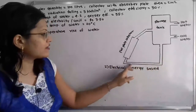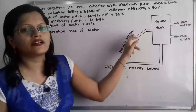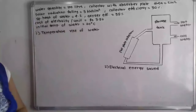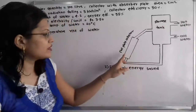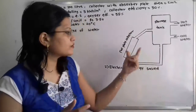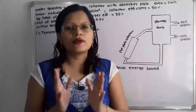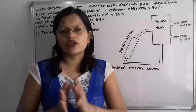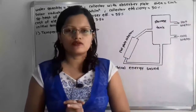When the cold water enters the flat plate collector, that is the initial temperature, and when it leaves the flat plate collector that is the final temperature. We have to find out the temperature rise of water — how much temperature is rising. Then we have to find out the electrical energy saved and the monthly electricity bill, since solar energy is free of cost.